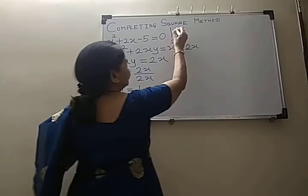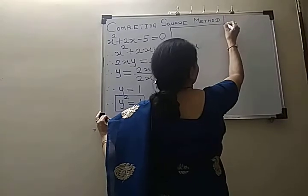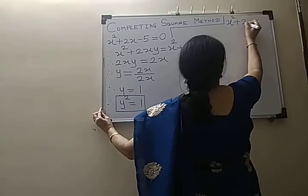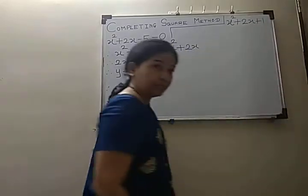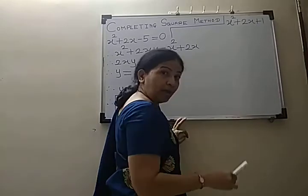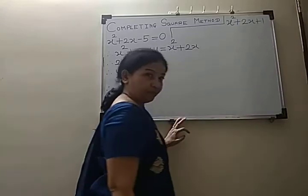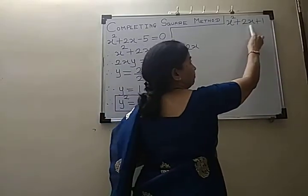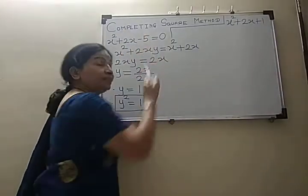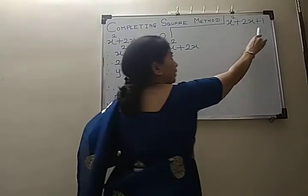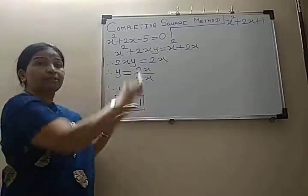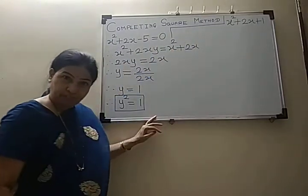So, x squared plus 2x plus 1 is a perfect square — it is a square of x plus 1. This is a perfect square, and that is why this method is called the completing square method. We have completed the square.